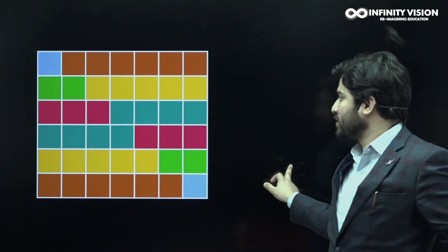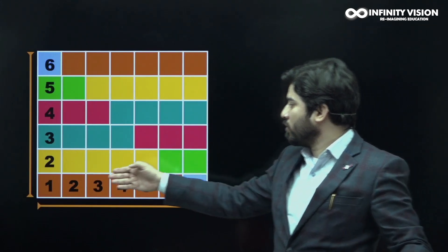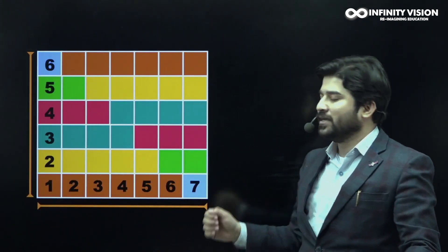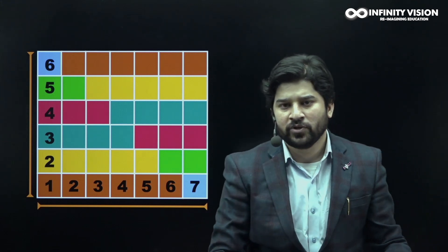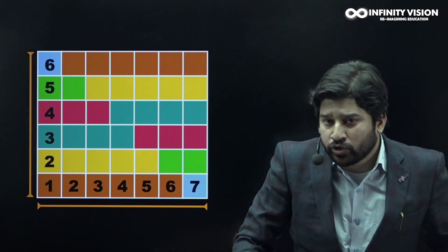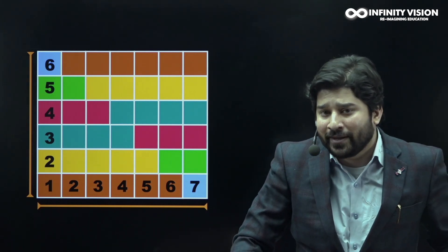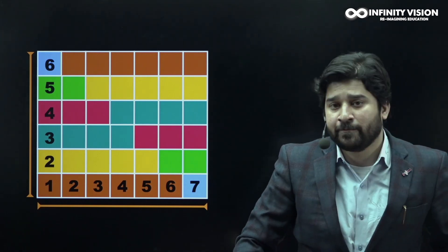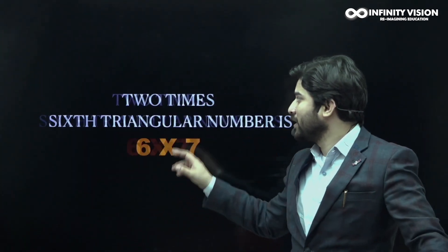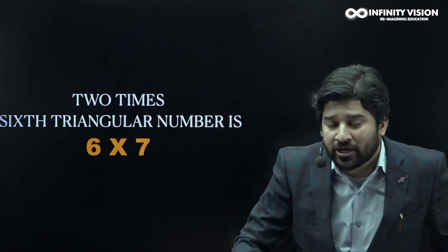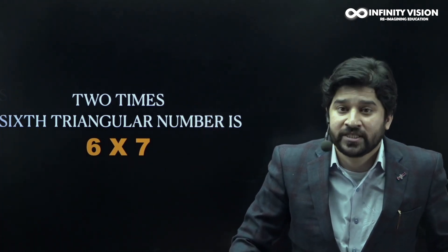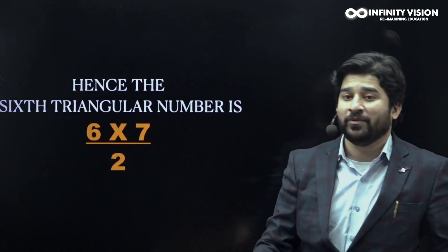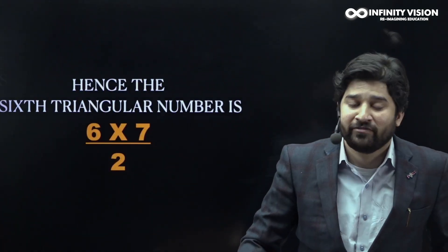Let's see the dimensions of this rectangle. The breadth is 6 and the length is 7. So basically two sixth triangular numbers made a bigger rectangle whose dimension is 6 by 7. You can say that 2 times the 6th triangular number equals 6 into 7, so the sixth triangular number is 6 into 7 divided by 2.